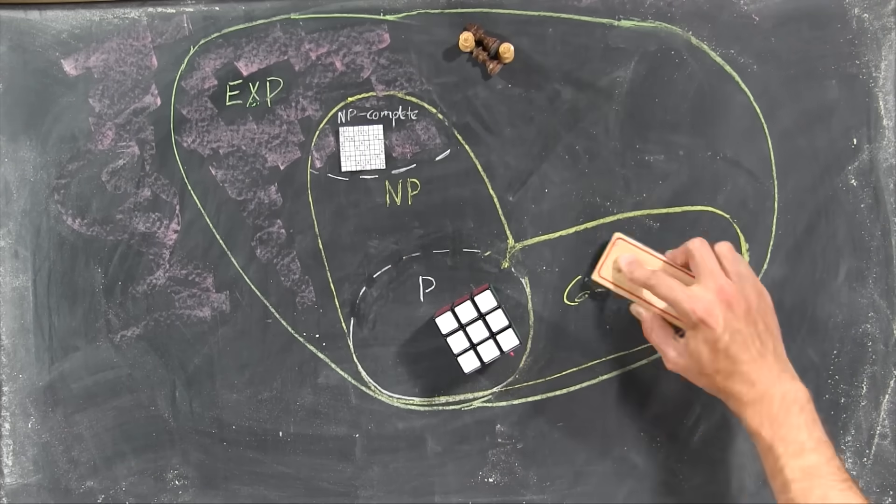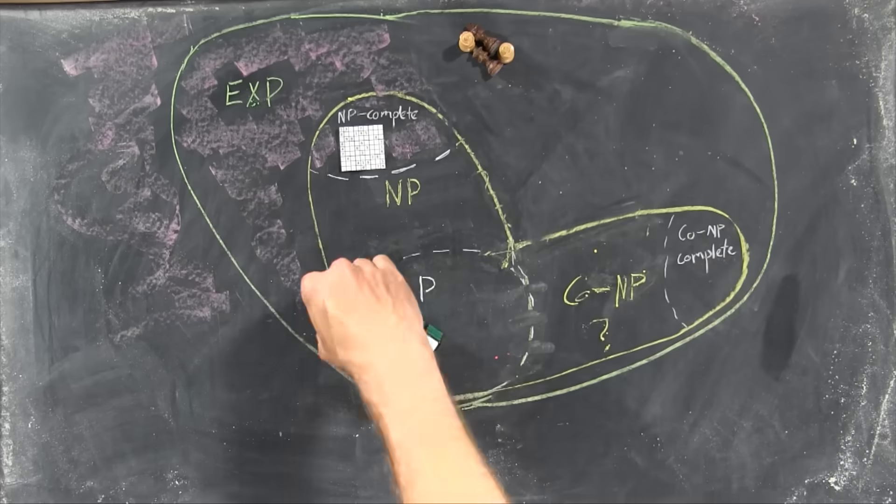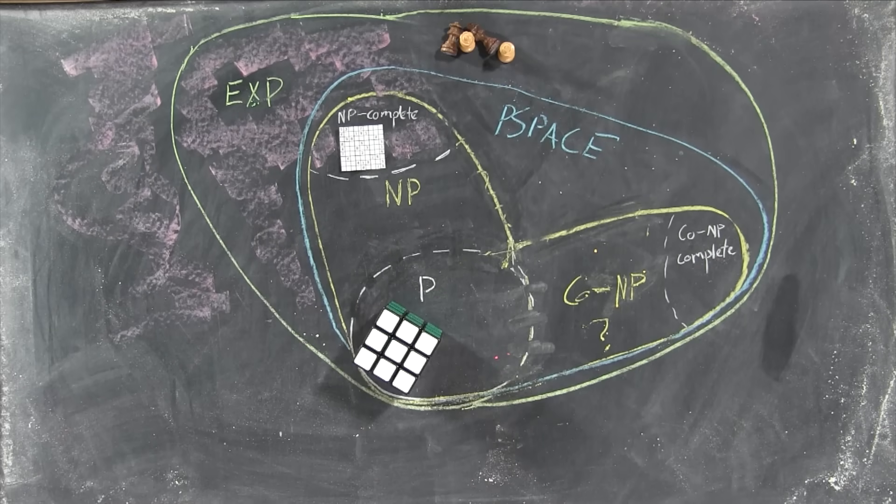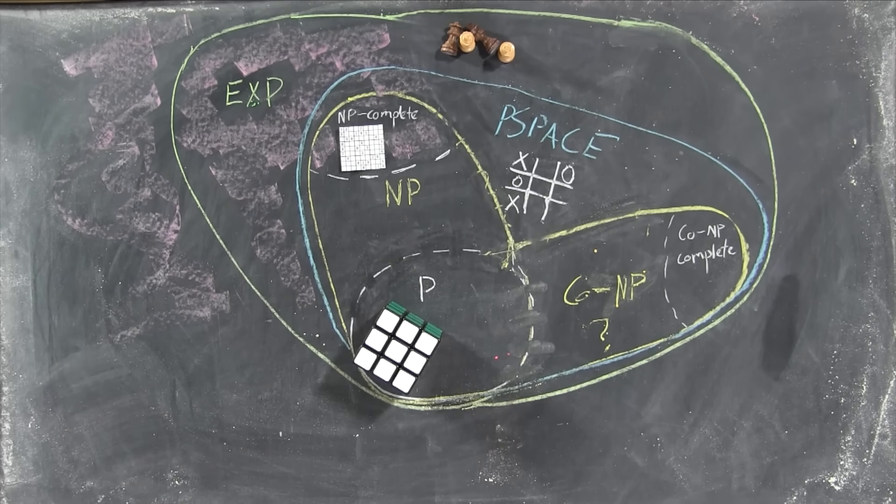There's also co-NP, the class of problems where instead of being easy to check right answers, it's easy to exclude wrong answers, which may or may not be the same as NP. And then there's P-space, the class of problems that can be solved given unlimited time, but using only a polynomial amount of space for memory.